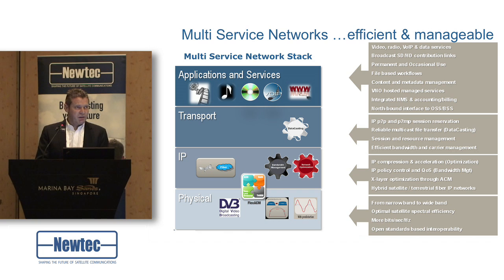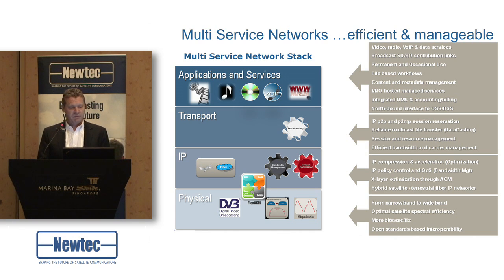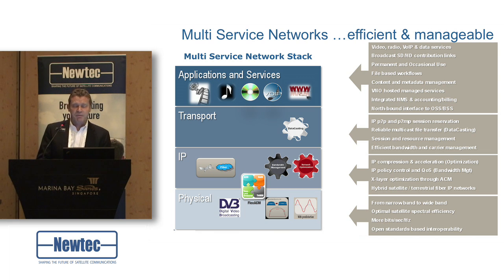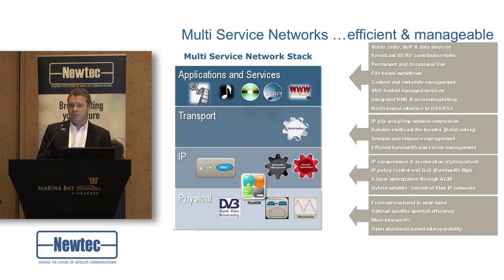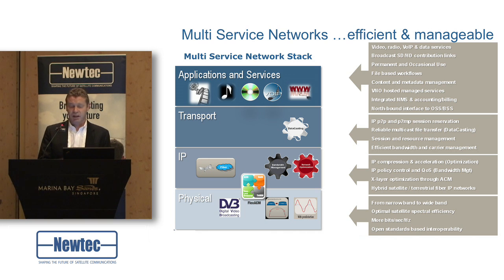We have a unique technology called FlexACM — we have a very nice demo on our booth. FlexACM sits somewhere between the physical layer and the IP layer. What it basically does is adapt the traffic patterns on the IP layer to the available bandwidth on the physical layer, creating a continuous closed loop to optimize overall throughput on the network. I invite you to come see the working demo on our booth.